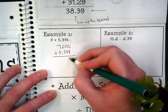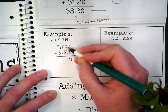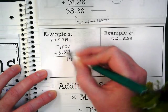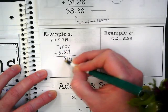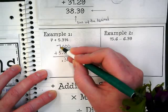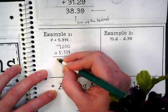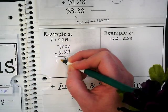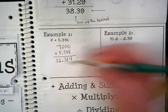And then we're going to just simply add this. 0 plus 4, 0 plus 1, 0 plus 3. We bring the decimal down, and 7 plus 5.